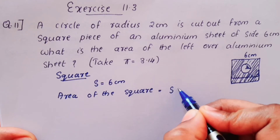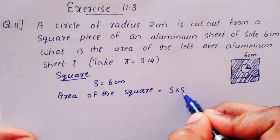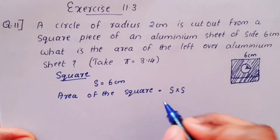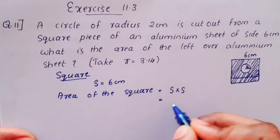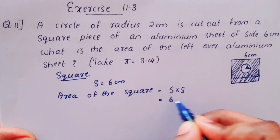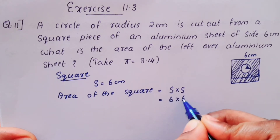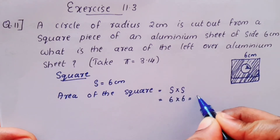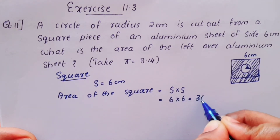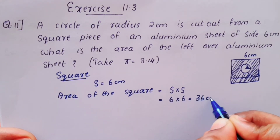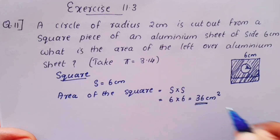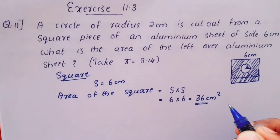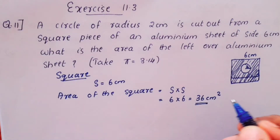Area of square equals side × side, which is 6 × 6, equal to 36 centimetres squared. So the area of the square is 36 cm².